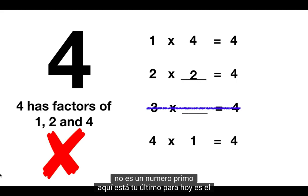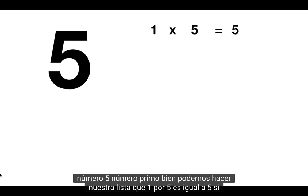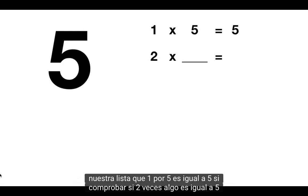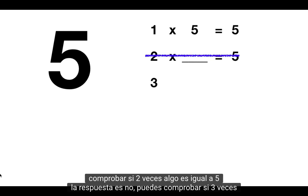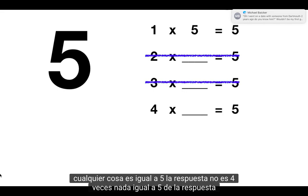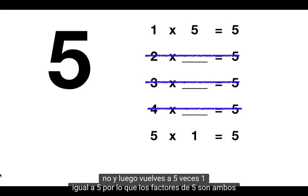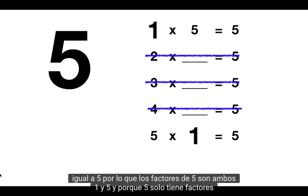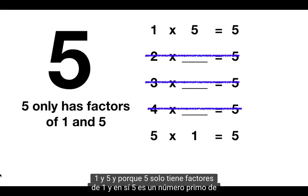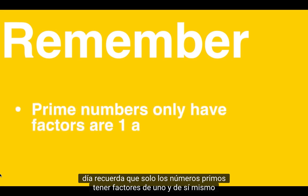Here's your last one for today. Is the number 5 a prime number? We can check: 1 times 5 equals 5. If we check if 2 times anything equals 5 — the answer is no. 3 times anything equals 5 — the answer is no. 4 times anything equaling 5 — the answer is no. And then you get back to 5 times 1 equaling 5. So the factors of 5 are both 1 and 5, and because 5 only has factors of 1 and itself, 5 is a prime number. Remember that prime numbers only have factors of 1 and itself.